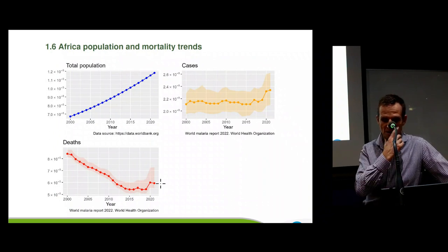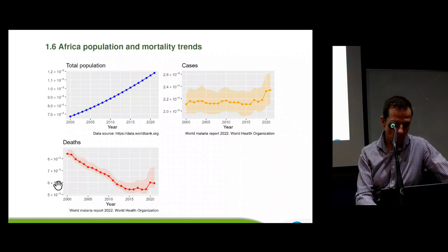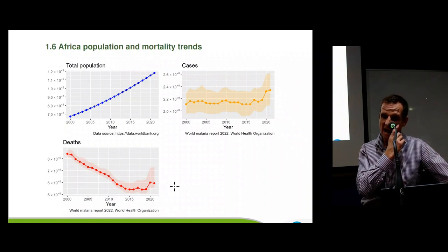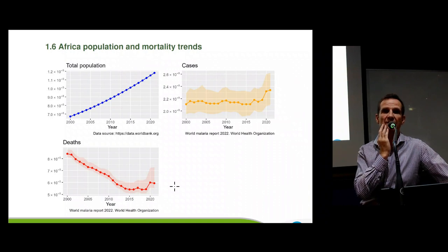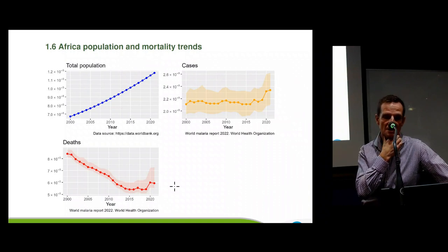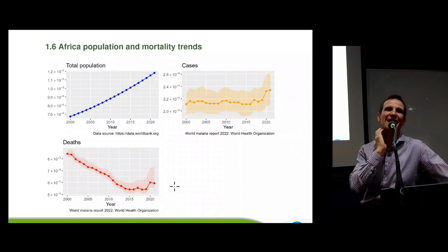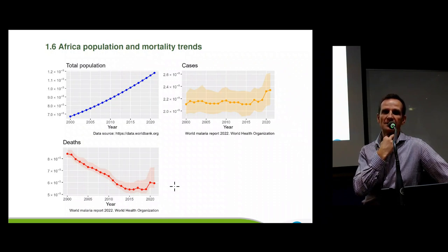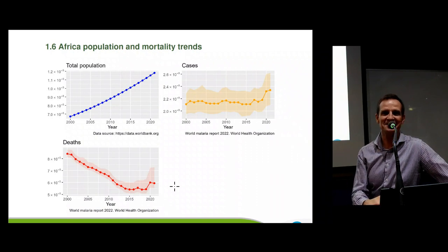I should also mention that there are currently about 600,000 deaths a year from malaria, and 80% of those are children under five. So most of the deaths in Africa from malaria are children under five years — about 400,000 deaths a year, or roughly about 1,000 kids a day. There's quite a large imperative to do something about this disease.